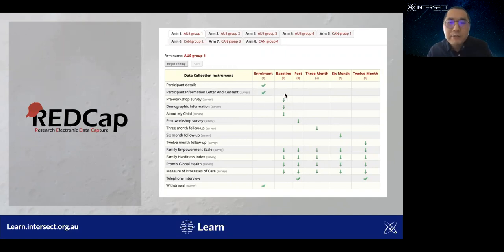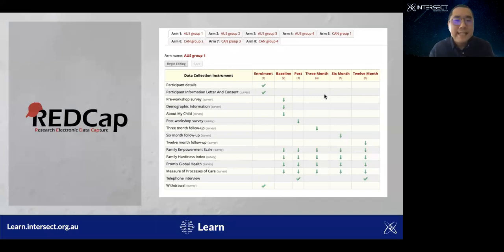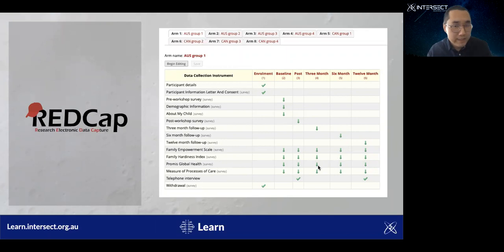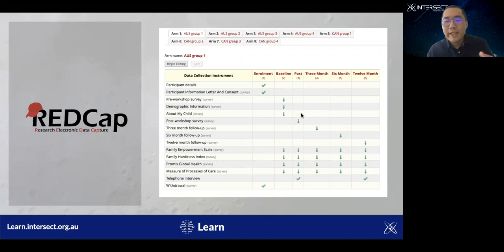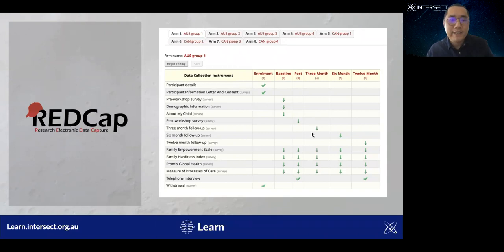A nice feature of REDCap is that you can set up automatic emails that can be sent to the right group of people at the right time point. For example, you can set up an automatic email so that three months after the enrollment, participants will receive an invitation to do the three-month follow-up.